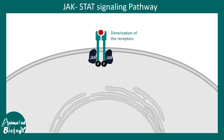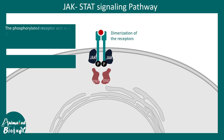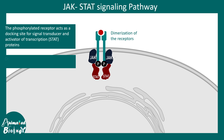After phosphorylation of the receptor, specific signal transduction proteins known as STATs can bind to these phosphorylated receptors. Once STAT binds, JAK can further phosphorylate these STAT molecules. STAT stands for Signal Transducer and Activator of Transcription — essentially a transcription factor.